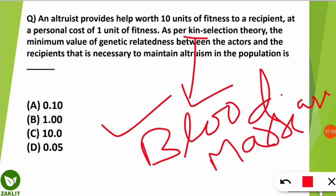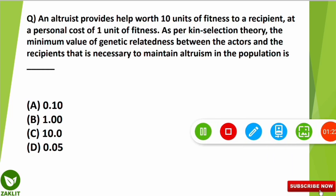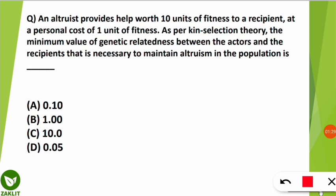Let's re-read the question keeping these concepts in mind. The altruist is the person providing happiness or welfare, and according to kin selection theory, genes are controlling this altruistic behavior. The altruist provides help worth 10 units of fitness to a recipient — this help or care is measured in units of fitness.